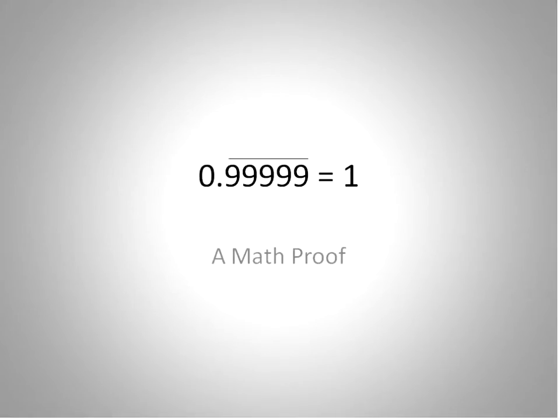Hello, this is Mr. Bussington, and in this lesson, this quick silly lesson, I'm going to do a math proof that's basically something to freak out your math teacher. You can go ahead and prove that 0.999 repeating forever is actually equal to 1 using this math proof.